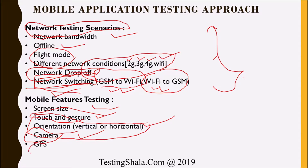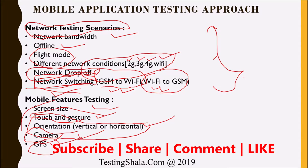We also validate GPS — the location service — to ensure that when GPS is integrated with the application, the location services are working correctly. All the mobile features listed here — screen size, touch, orientation, camera, GPS — when used with the mobile app, the app should work seamlessly without any exceptions in any situation. That is the expectation of mobile feature testing.